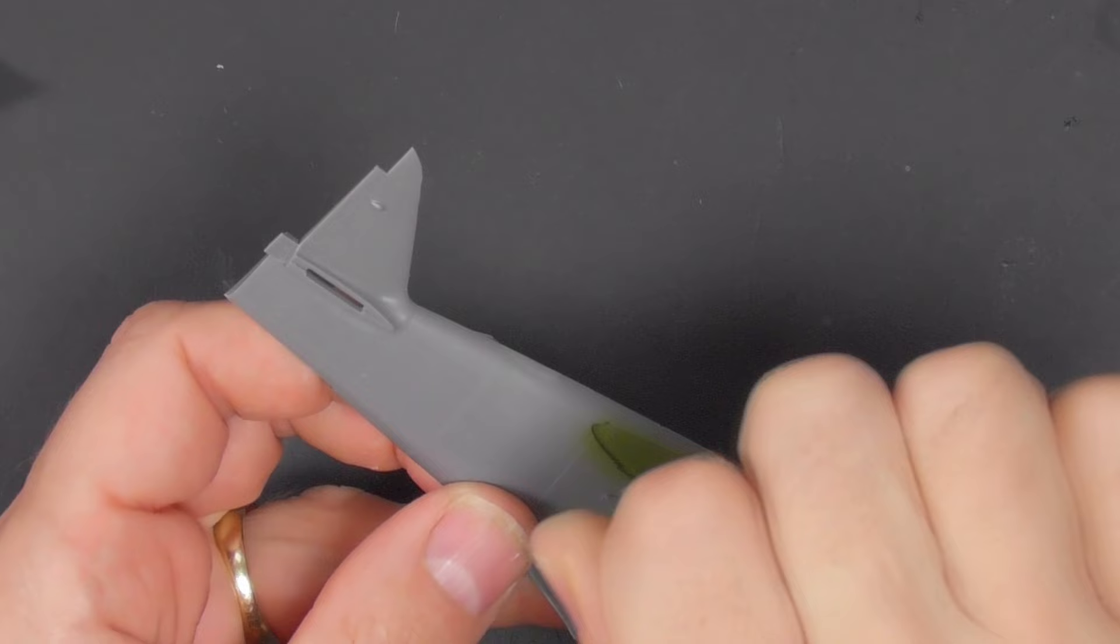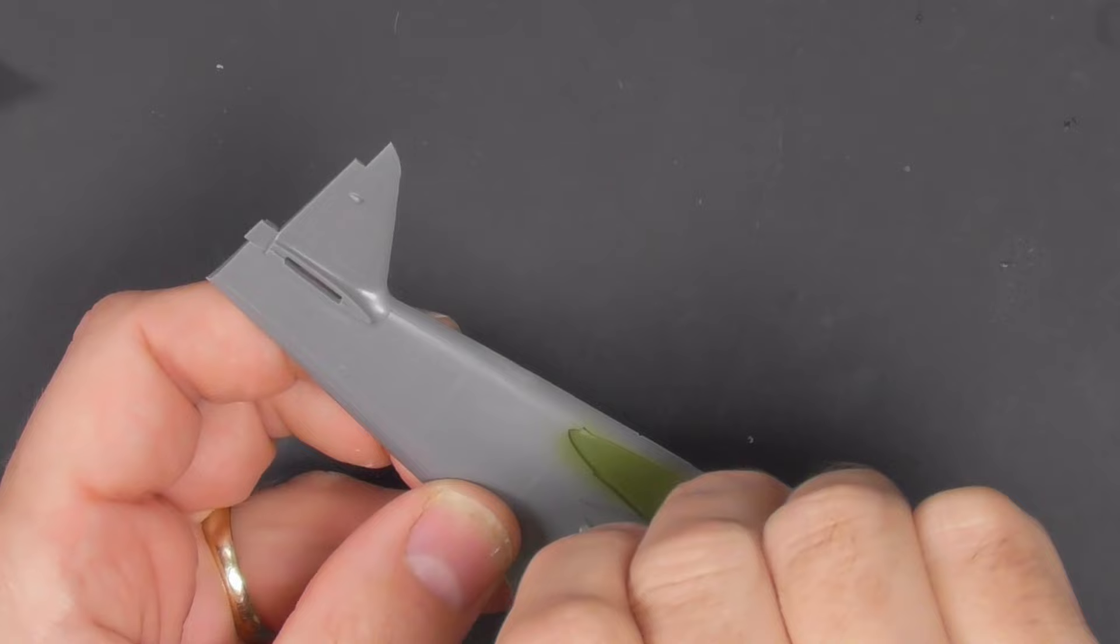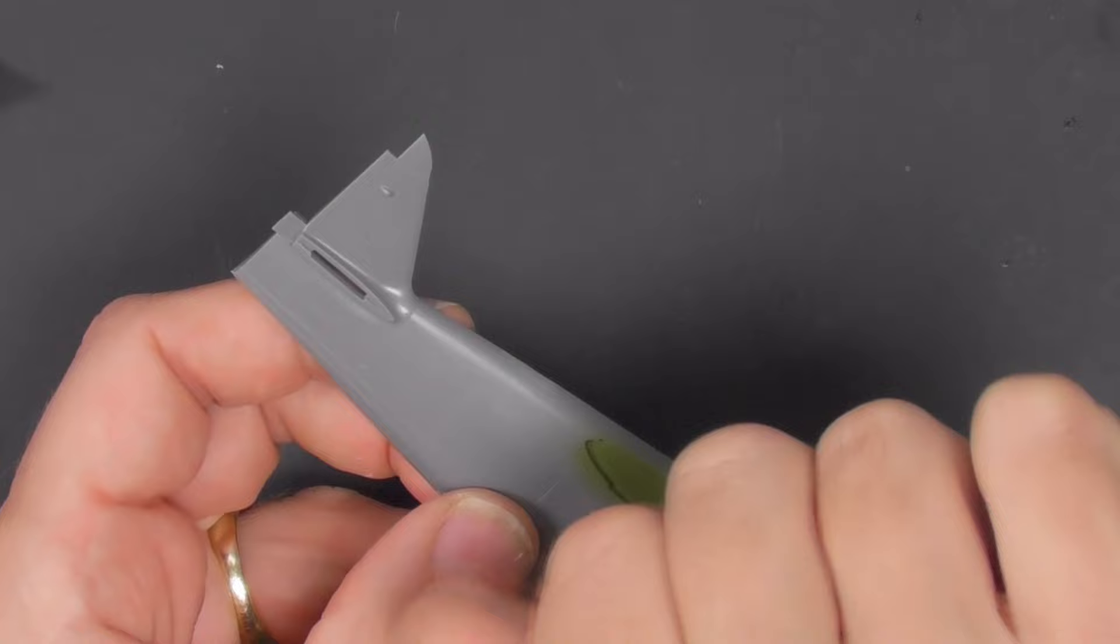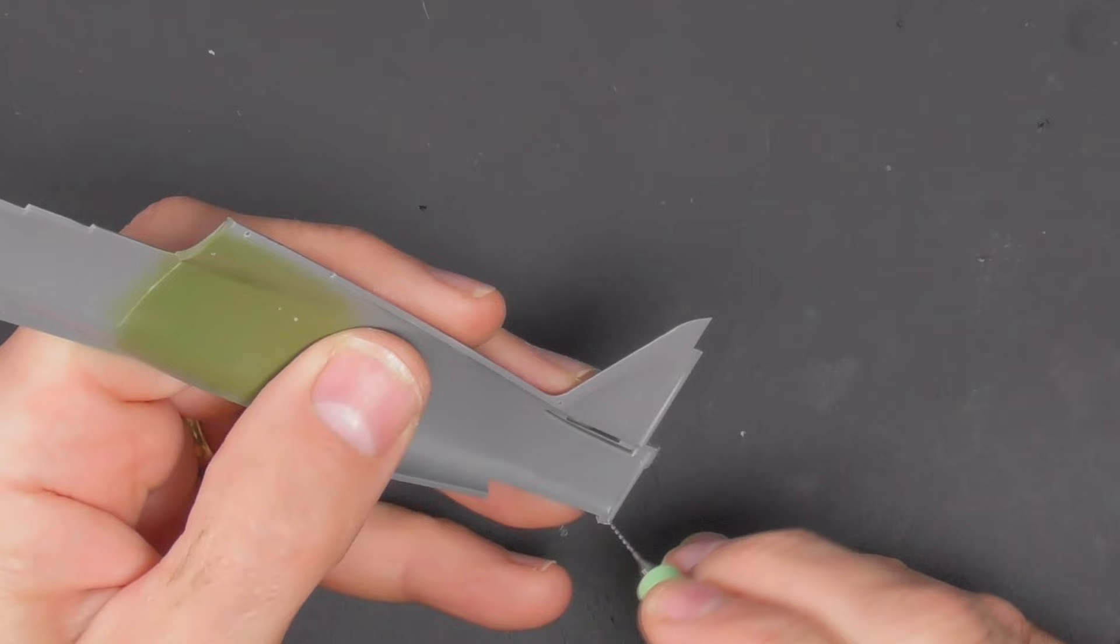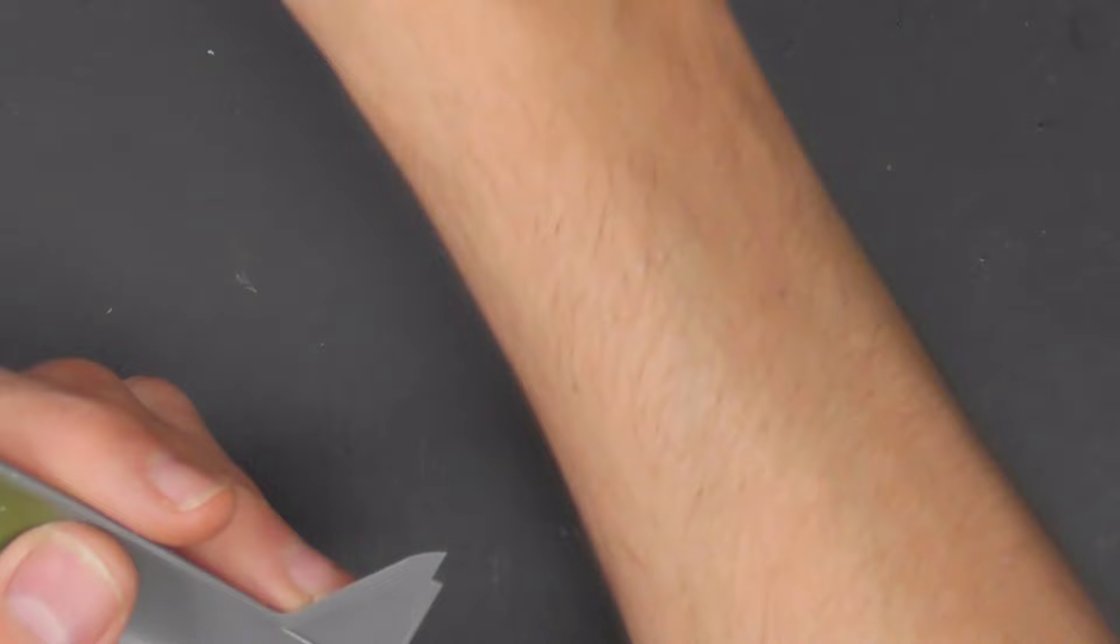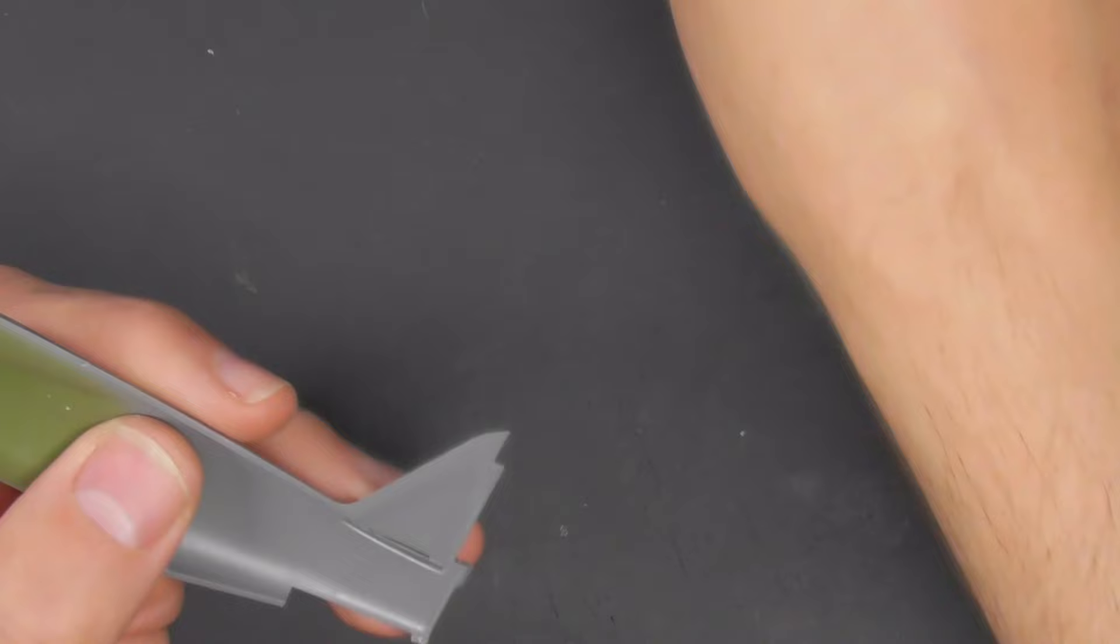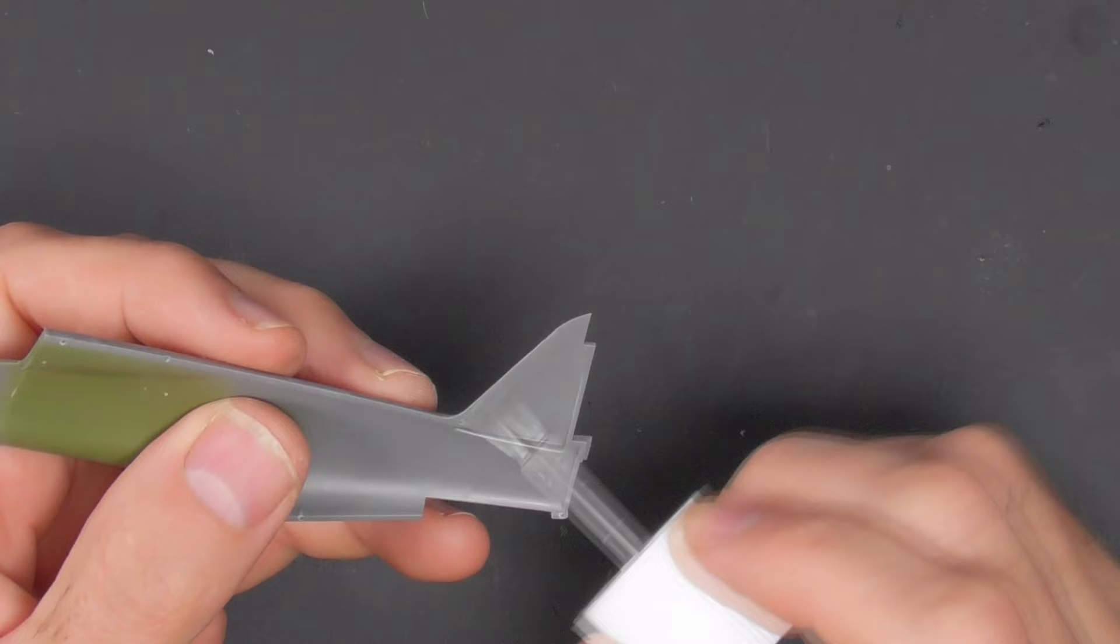Hello and welcome back to Scale Modeling Cafe, and welcome to part three of the Clear Prop H75N Hawk. In this episode I'm going to do the construction, and you can see everything started off with a little bit of drilling. That'll be for the aerial holes. Some of the pin holes were a little bit tight actually, so I just opened those up with a larger drill, and that really helped.